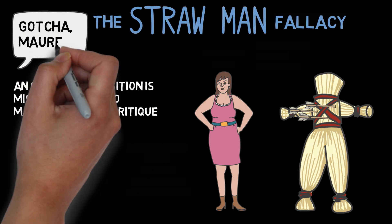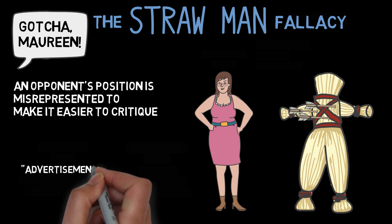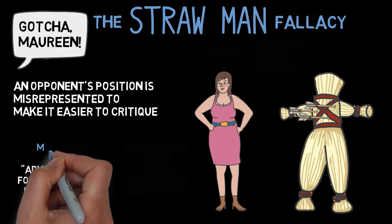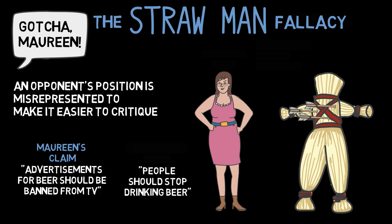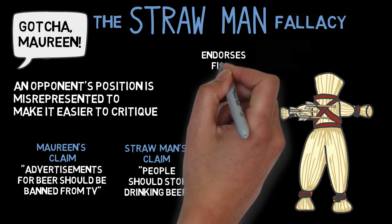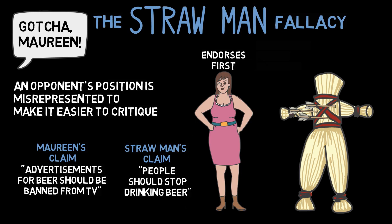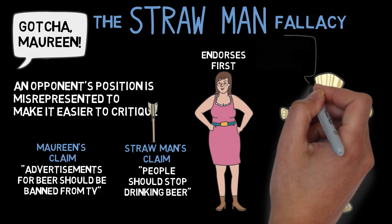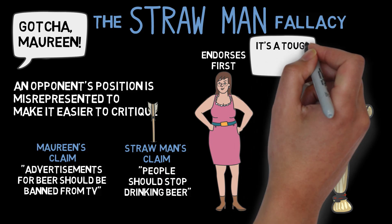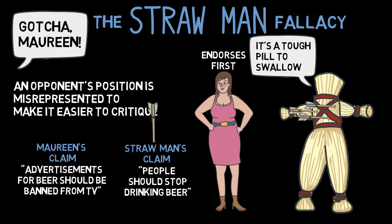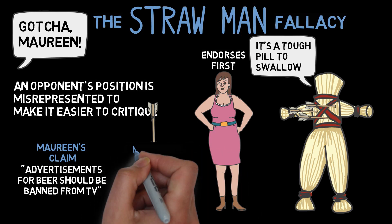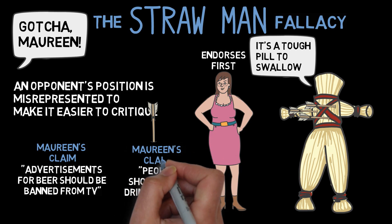To see this more clearly, consider the following two claims. First, "Advertisements for beer should be banned from TV" — this is Maureen's original claim. Second, "People should stop drinking beer" — this is my portrayal of Maureen's original claim. These are two very different claims. Maureen only endorses the first one, but my objection is to the second claim, which is much easier to refute, as it is a very extreme view. I have improperly attributed this extreme view to Maureen and then proceeded to attack it.